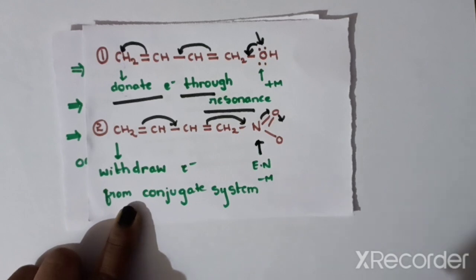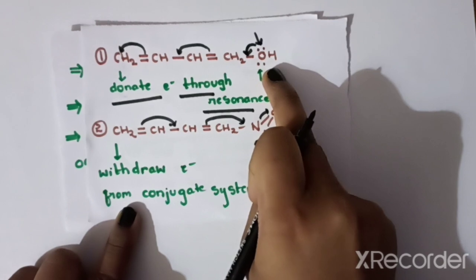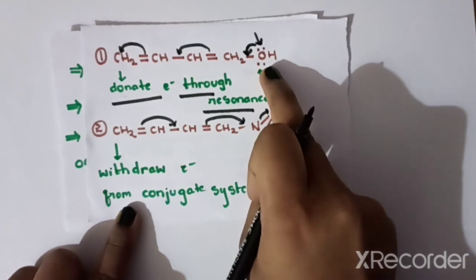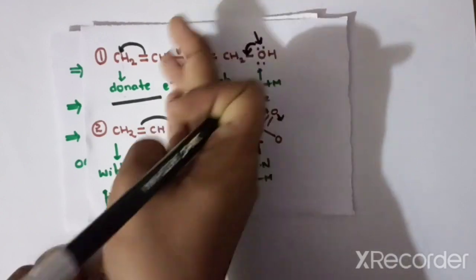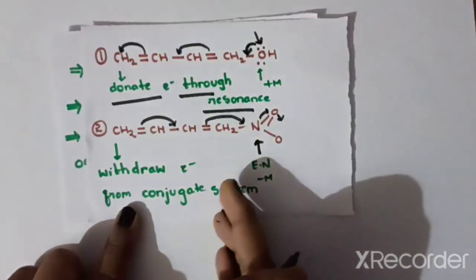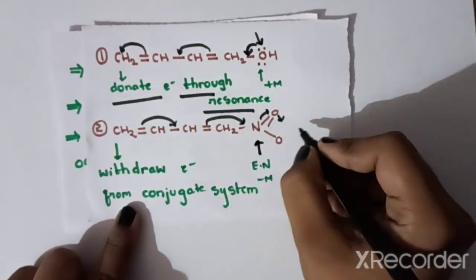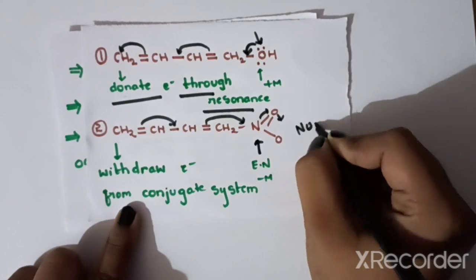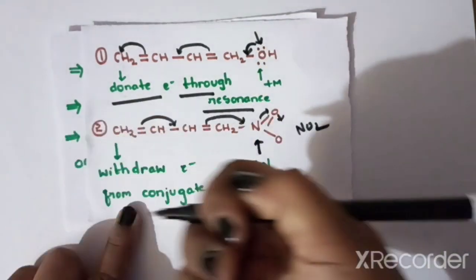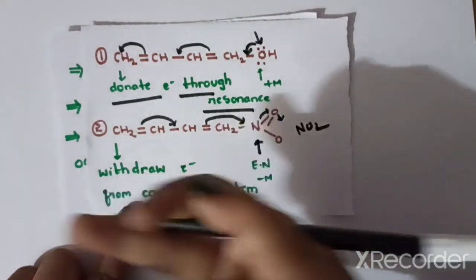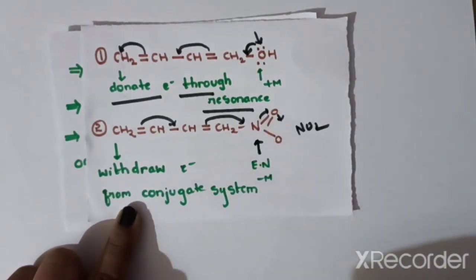The plus M effect involves the lone pair of electrons. The lone pair of electrons is donated to the conjugated system. The minus M effect involves an electronegative group — for example, NO2. The electronegative atom withdraws electrons from the conjugated system. So, this is the minus M effect.